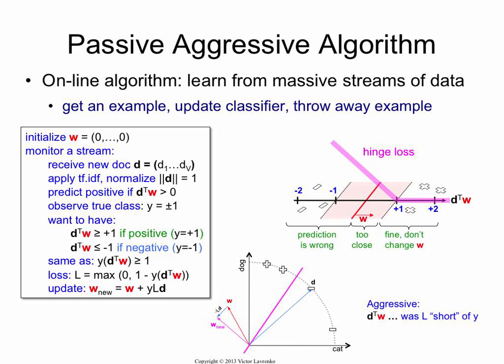So look at what's happening. Assume that it wasn't perfect, so assume that the loss was not zero. What does this mean? This means that the dot product between the document and the weight vector was short of what it should be.